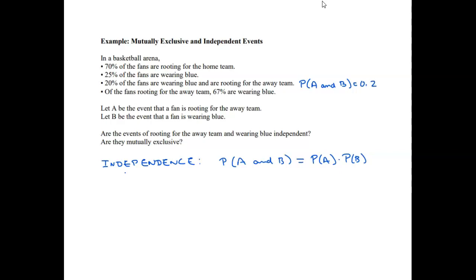Okay, so we have that one. 70% of the fans are rooting for the home team, so this is like P of A prime. So it is 0.7, which means that P of A is going to be 0.3. I'm making an assumption here that whoever is going to the basketball arena are either going to root for the home team or the away team — there's no undecideds. The fan is wearing blue, so P of B is 0.25.